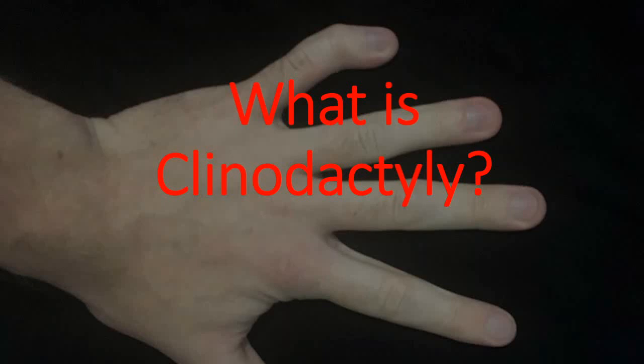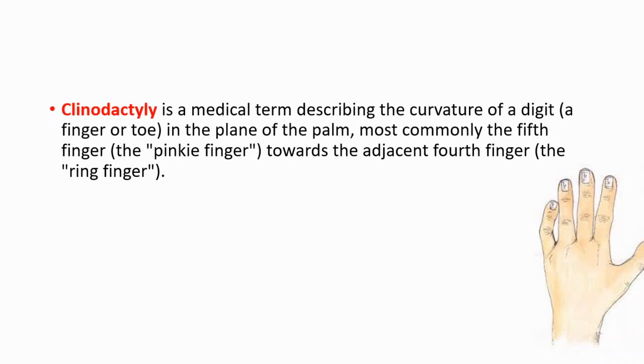Hey everybody, this is your daily dose of medicine, and in this episode we are going to answer this question: what is clinodactyly? Let's get started. First of all, it's a medical term describing the curvature of a digit — it could be a finger or toe — in the plane of the palm, and most commonly the fifth finger towards the adjacent fourth finger.